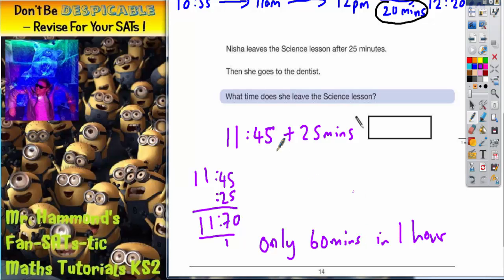So an easy way to do it is to say, right, okay, if we start at 11:45, if we go to the next hour, which would be 12, then that is actually 15 minutes. And we've got to do 25 minutes, so if we've done 15 minutes already, we've got to do an extra 10 minutes. And an extra 10 minutes onto 12 o'clock is 10 past 12.